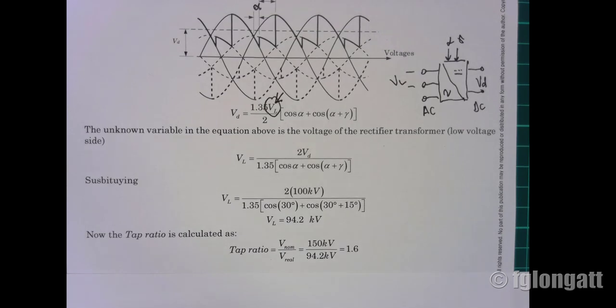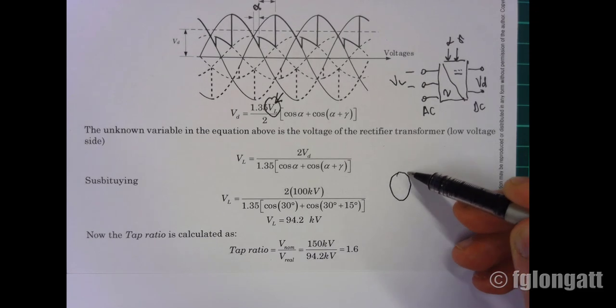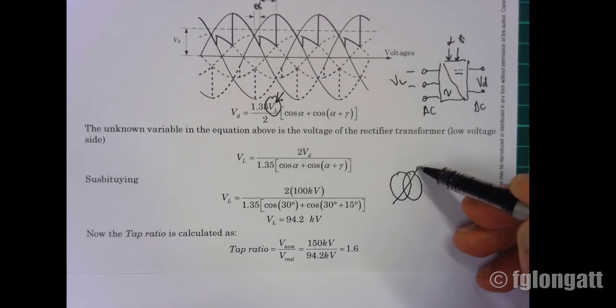We have here the voltage that we are getting, which is 94.2 kV. However, in the solution of this problem, we have a transformer, and you must remember there is a tap changer here.